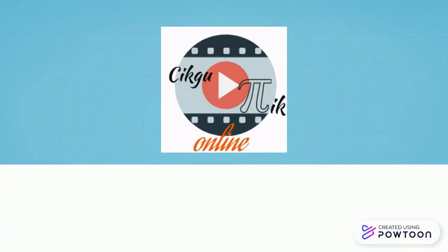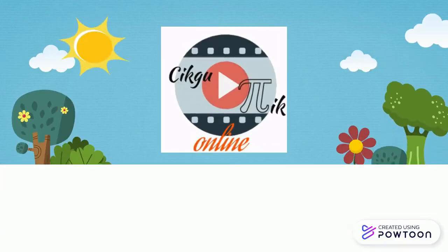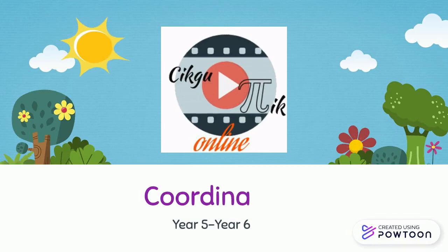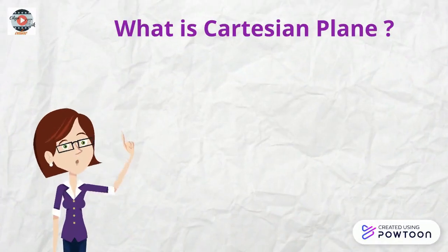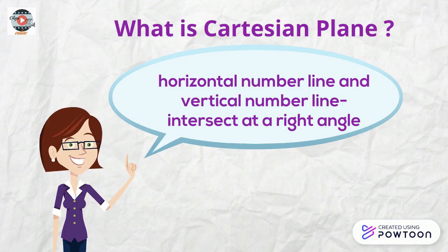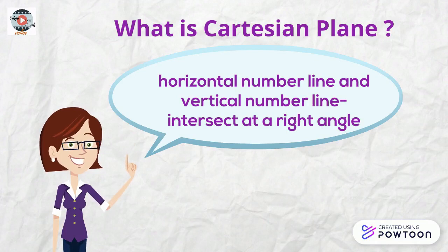Hello everyone, and welcome to this video. In this video, we will learn about the coordinate plane. A Cartesian plane consists of a horizontal number line and a vertical number line that intersect at a right angle.